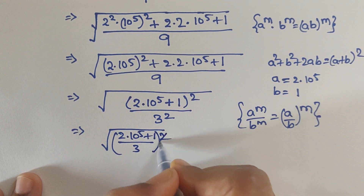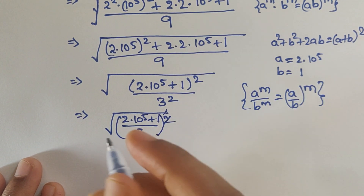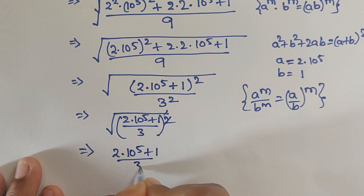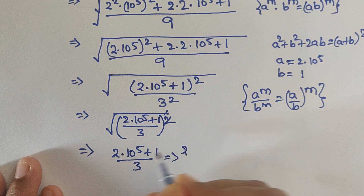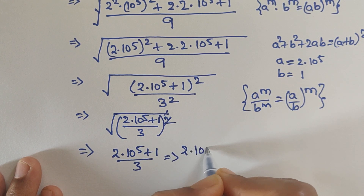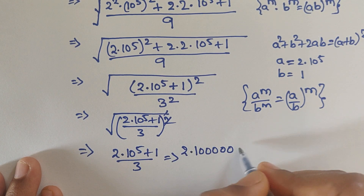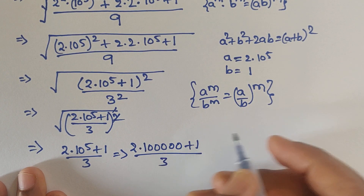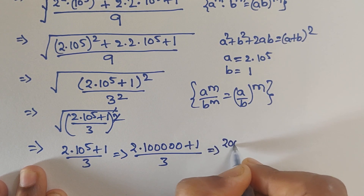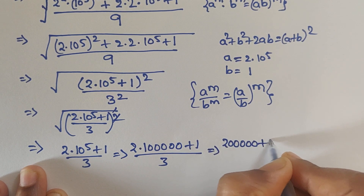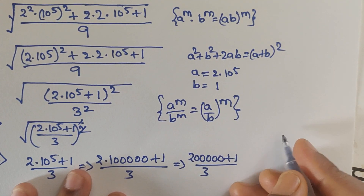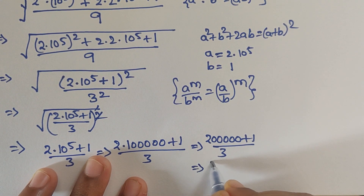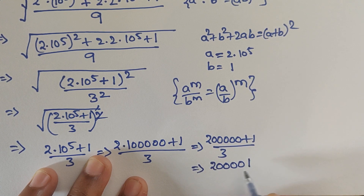We can write: square root of (2 times 10 to the power of 5 plus 1, divided by 3) whole squared. So the square root and square cancel. Then we get 2 times 10 to the power of 5 plus 1, divided by 3. We can write 10 to the power of 5 as 1 followed by 5 zeros (100000), plus 1, divided by 3. So 2 times 1 lakh equals 2 lakhs (200000), plus 1, divided by 3. Adding these: 200001 divided by 3.